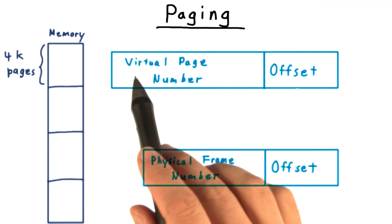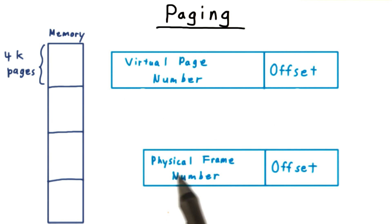But the number of bits involved in the virtual page number need not match the number of bits used to identify the physical frame number. That's because, as we've said before, it's possible to have more virtual pages than physical pages.